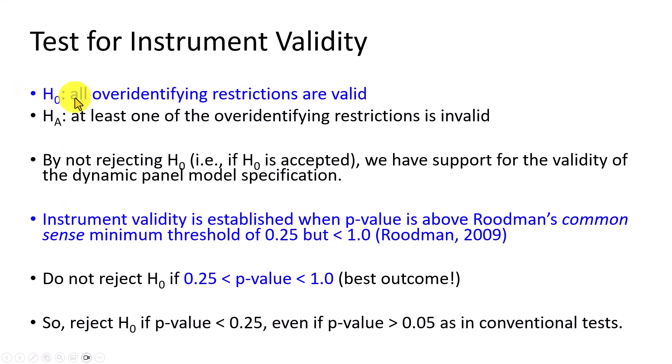And so by not rejecting this null hypothesis, we in effect have support for the validity of the dynamic panel model specification. Importantly though, the instrument validity here is established when the p-value is above what's referred to as Roodman's common sense minimum threshold, which is 0.25, but it's got to be less than 1. And so we do not reject the null hypothesis of over-identifying restrictions if our p-value lies between 0.25 and 1. And so we would reject the null hypothesis if our p-value is less than 0.25, even if it is greater than 0.05, as is the case in conventional tests.